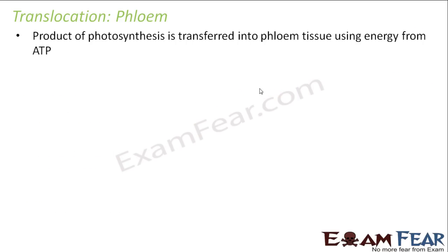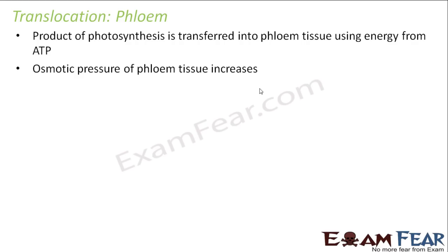The product of photosynthesis, that is starch or glucose, is transferred into phloem tissue using energy from ATP. Now the osmotic pressure of the phloem tissue increases. So now we are seeing what actually causes this translocation to take place.